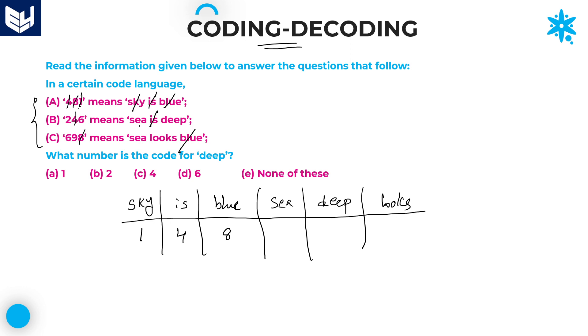'Sea' is there in the second and third sentence. Sea is the common word. Check which one is common among two and six - six is common. Therefore sea equals six. If sea equals six, obviously deep equals two, because only one word is there and its number is two. And here also only one word is there and its number is nine. Looks equals nine.